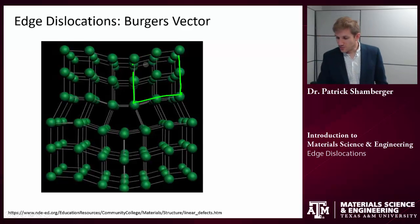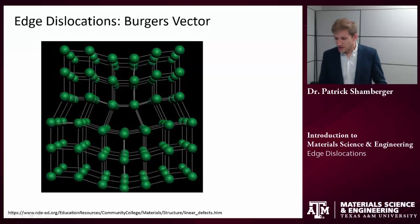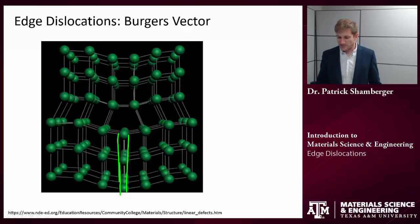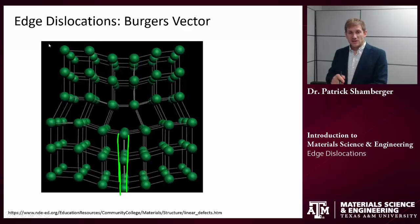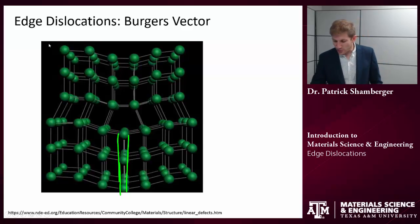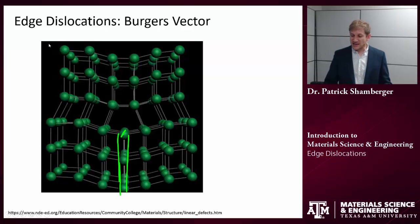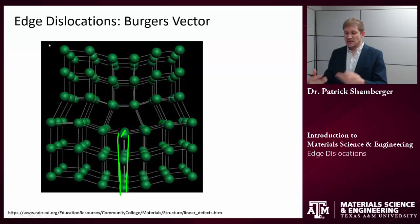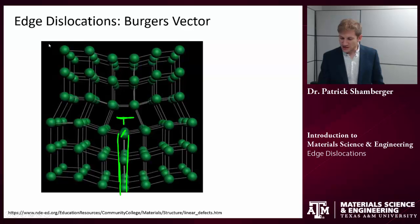The first thing that we need to do is identify the dislocation itself. If you look closely, you see there's an extra half a plane of atoms here. The edge dislocation is the line — the linear defect that forms the boundary of that extra half a plane. So if I connected these three atoms in a line, that is the edge dislocation. It's a line that's extending into and out of the plane. The symbol for an edge dislocation looks like a T, where the lower prong of the T is pointing towards that extra half a plane of atoms.